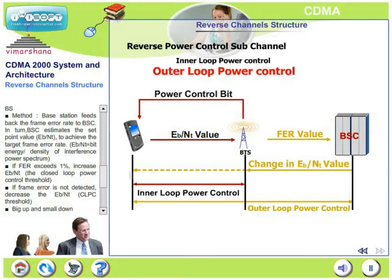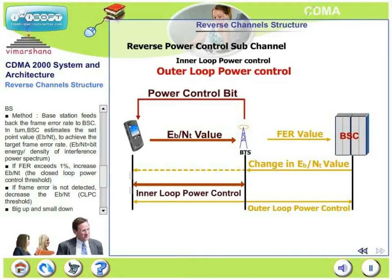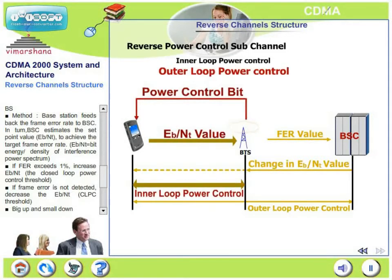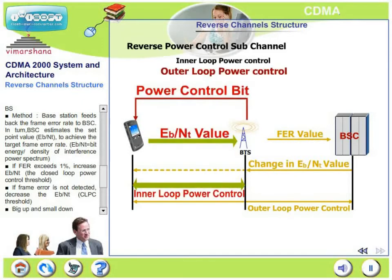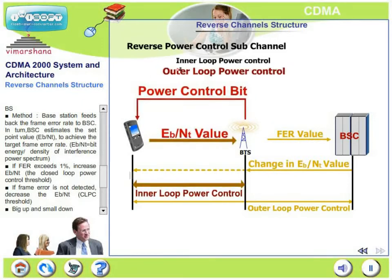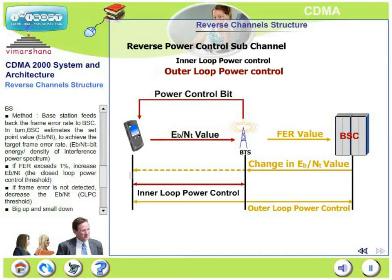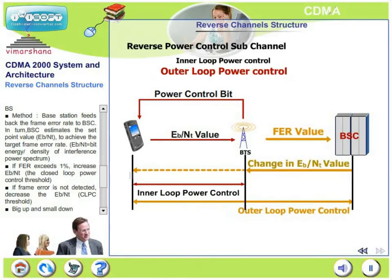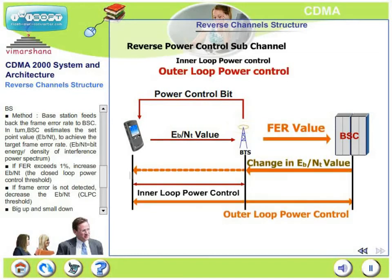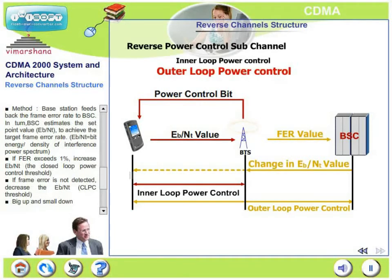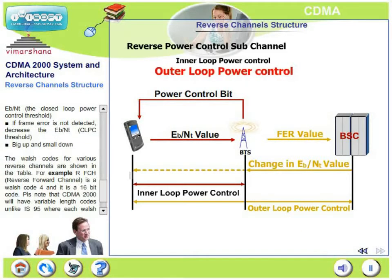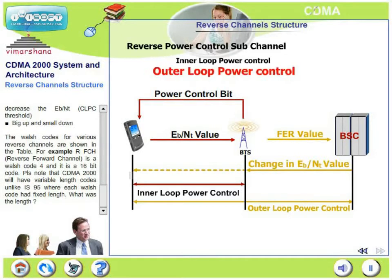Eb/Nt is the bit energy divided by the density of interference power spectrum. If the frame error rate (FER) exceeds 1%, increase the Eb/Nt closed-loop power control threshold. If FER is better than 1%, decrease the Eb/Nt. The principle is: big step up and small step down when frame errors are not detected.